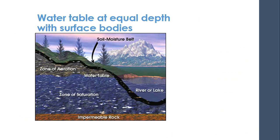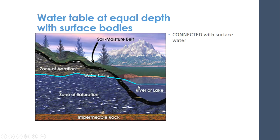The water table is at equal depths with surface bodies of water. When we talked about that dam that was removed — without the water, the river dropped considerably and the ground started to sink. And rivers and lakes are connected: surface water is connected to groundwater, and they're part of kind of the same body of water.